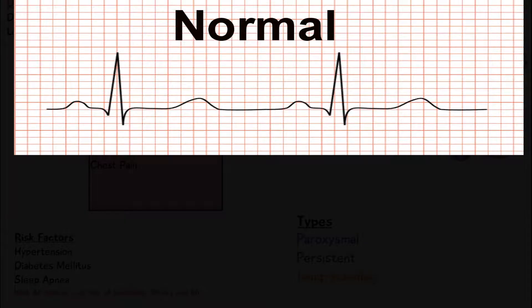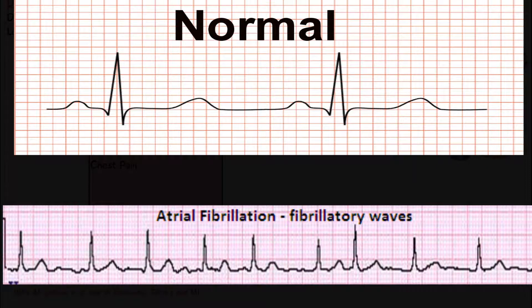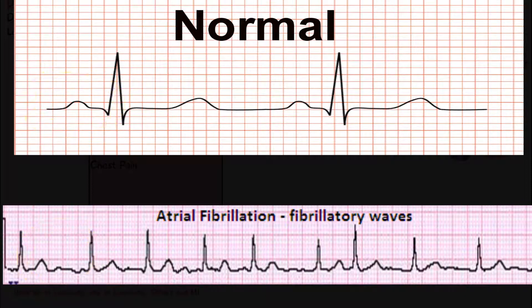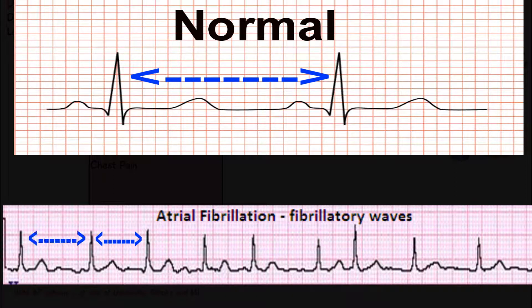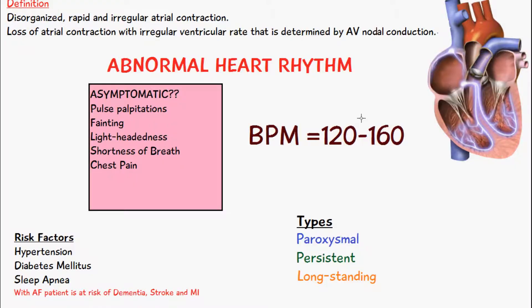The diagnosis of atrial fibrillation is done on an ECG. Comparing a normal ECG to one from a patient with atrial fibrillation, the main difference is that the P wave is all over the place with atrial fibrillation. The R-R intervals are completely random, with no set distance as seen in a normal ECG.